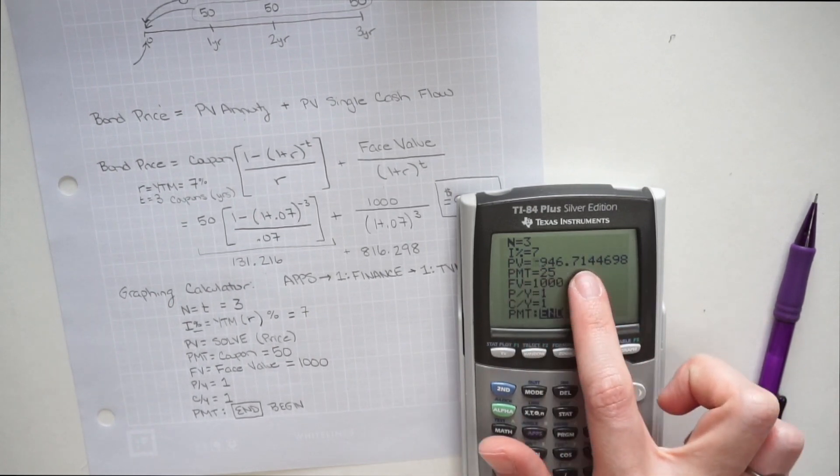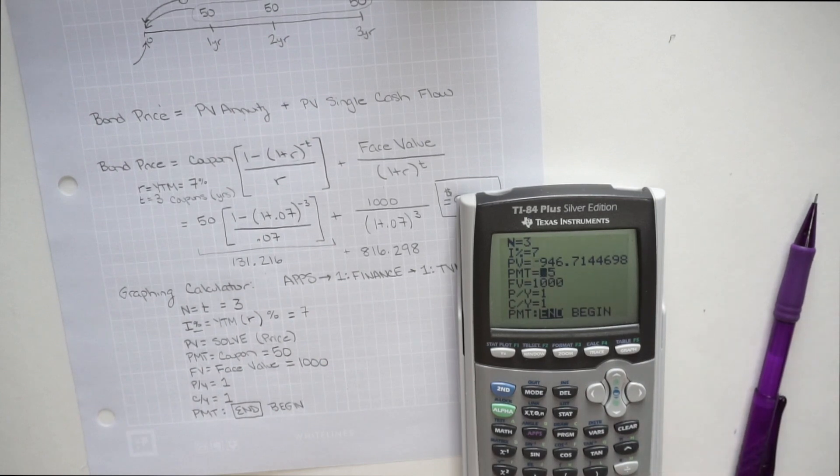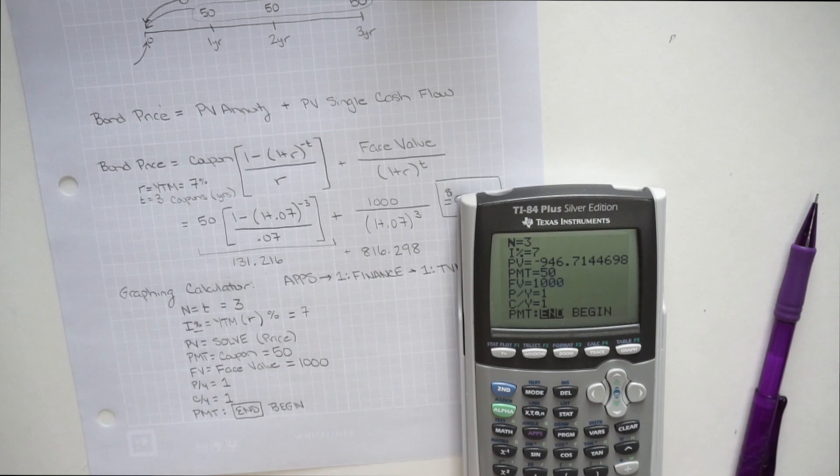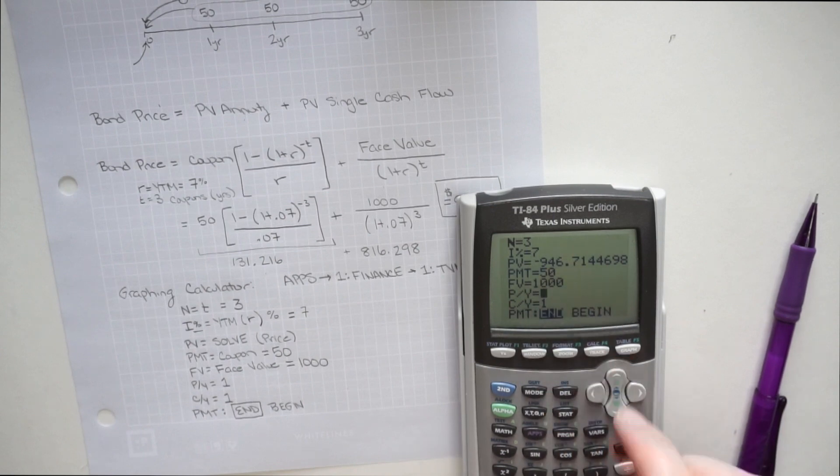And then face value, I already had 1000 there, but I'll just type it in again. And then just to note again, that payment I've set to end. So end is highlighted. Now I'm going to scroll back up to present value. And I want to make sure it's hovering there and flashing.